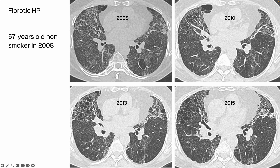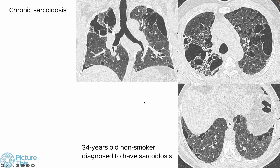If you only saw the 2015 scan, you might even need to put LIP as a differential and wait to see if there is an underlying etiology like Sjogren's. If everything fits, then you would say this is consistent with fibrotic HP. This is why old scans matter — if someone gives you the 2008 scan, life becomes so much easier.